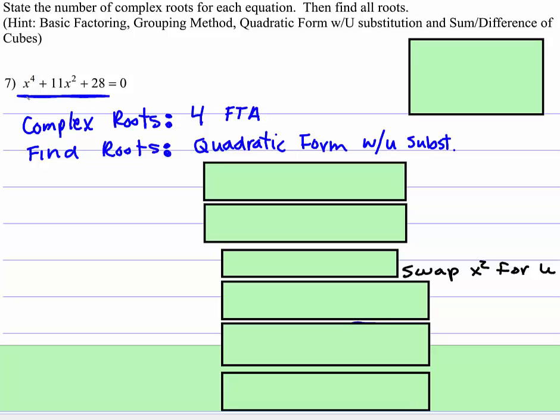We have this, what looks like a quadratic, but instead of being x squared and x to the first, it's x to the fourth and x squared. So we're going to use a method. We're going to put it in quadratic form, but we're going to use something called u substitution.